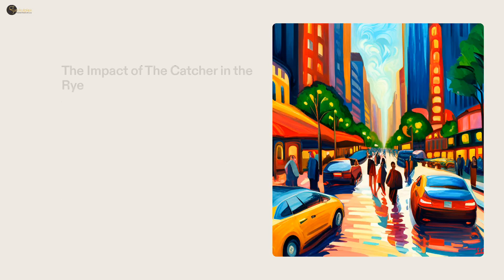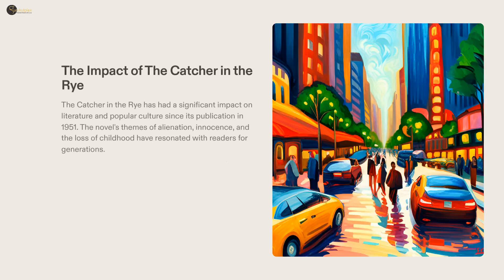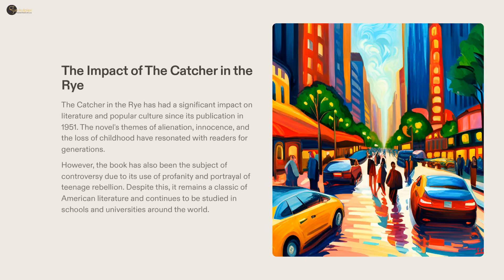As one of the most influential novels of the 20th century, The Catcher in the Rye has had a dramatic, lasting impact on literature and society. It explores themes of alienation, innocence, and the loss of childhood, and these resonated with readers of all ages. Though it has been controversial for its use of profanity and portrayal of teenage rebellion, the novel remains a classic of American literature and continues to be studied around the world.